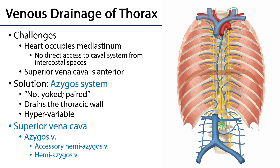The first is that we have a heart that is going to occupy the mediastinum. What that really means is that in that space of the heart there is no caval access for any of the posterior intercostal veins. We have the superior and inferior vena cava draining into the right atrium of the heart, and those posterior intercostal veins have no direct access.